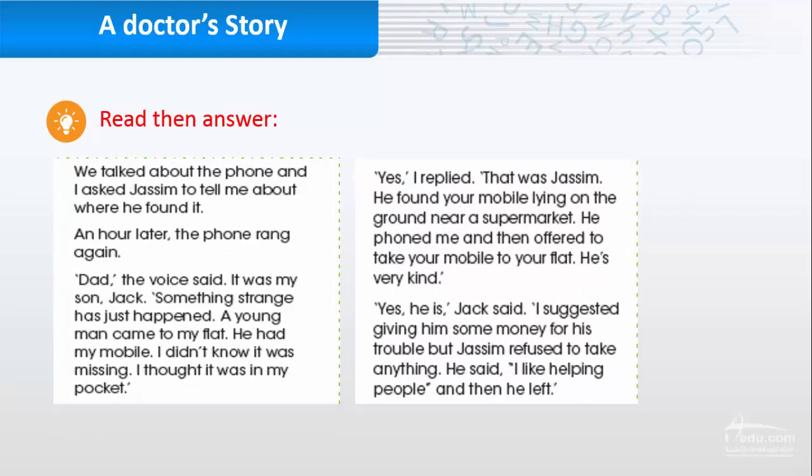We talked about the phone and I asked Jassim to tell me about where he found it. An hour later, the phone rang again. Dad, the voice said. It was my son Jack. Something strange has just happened. A young man came to my flat. He had my mobile. I didn't know it was missing. I thought it was in my pocket.